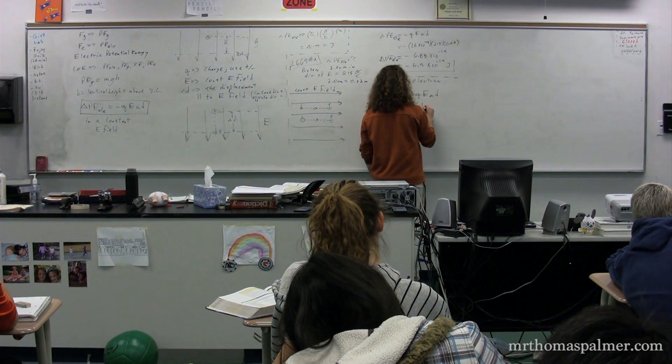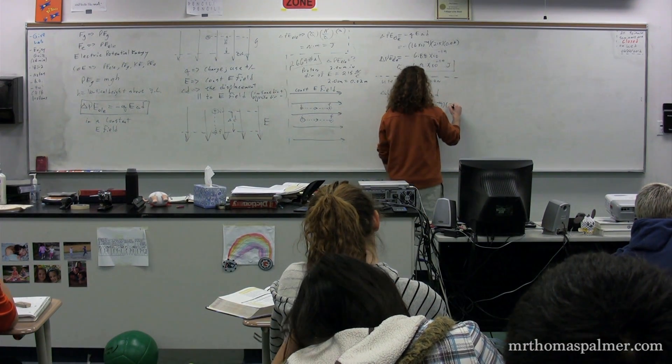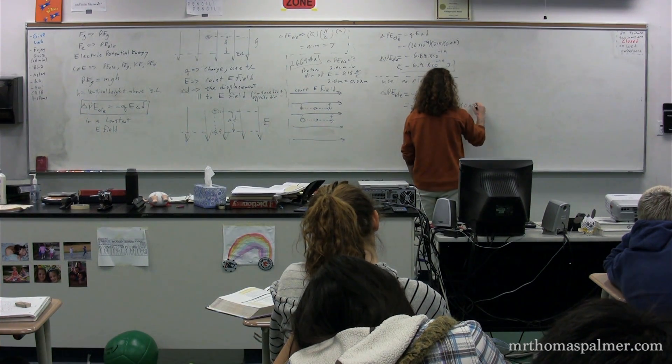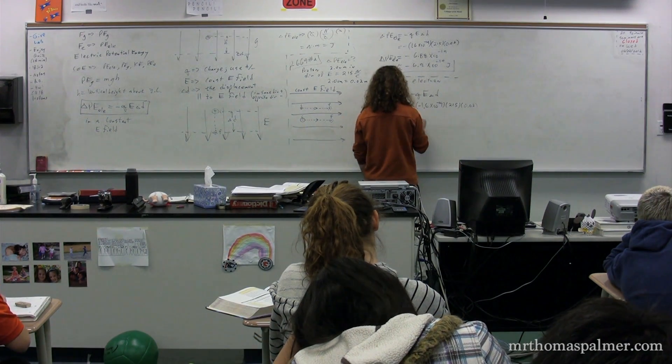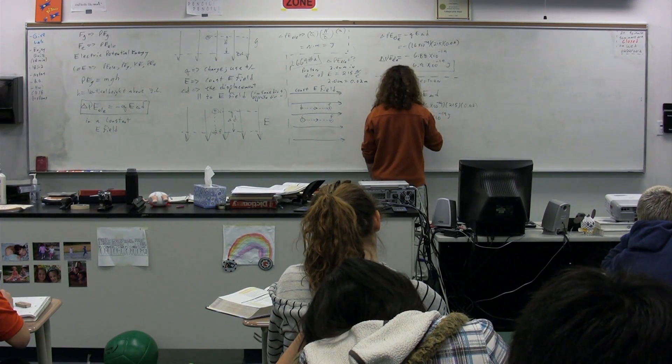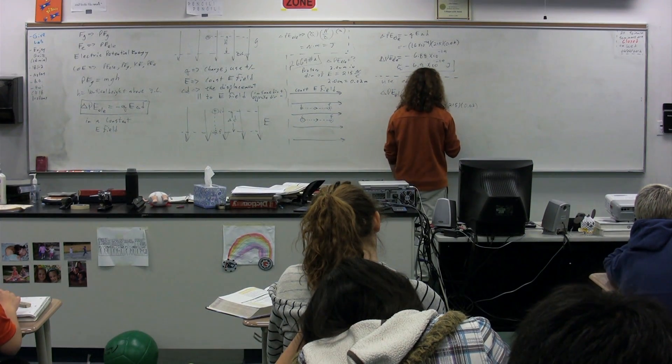The change in electric potential energy equals negative QE delta D, the negative of the charge, which is negative 1.6 times 10 to the negative 19 coulombs, the electric field, which is 215 newtons per coulomb, and the displacement, which is again 0.02. Which means we're going to end up with a positive 6.88 times 10 to the negative 19 joules. Or with sig figs, 6.9 times 10 to the negative 19 joules.